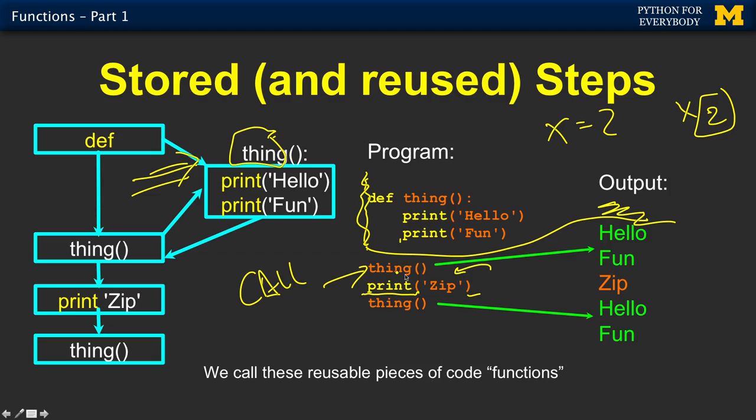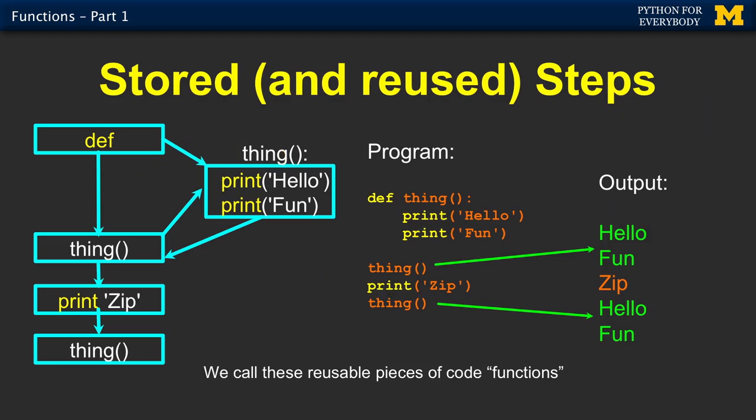Well, thing is a function, thing parenthesis, but there just happens to be no parameter in this because this is a really simple function. So what happens is def does nothing but remembers thing. So this thing then says, oh, let's go back and run that thing, run those two lines. So out come hello and fun. And then it comes back down to here, runs this print statement, so out comes zip. And then it says, oh, run that code again.